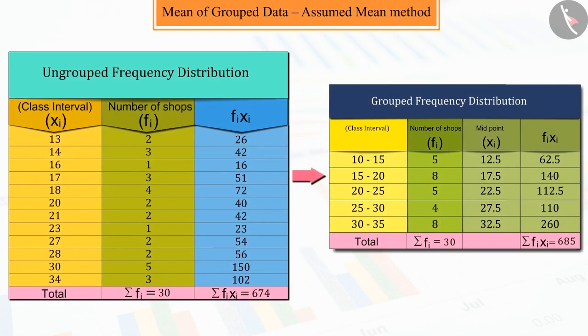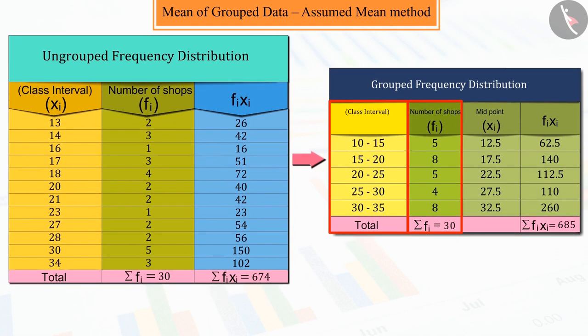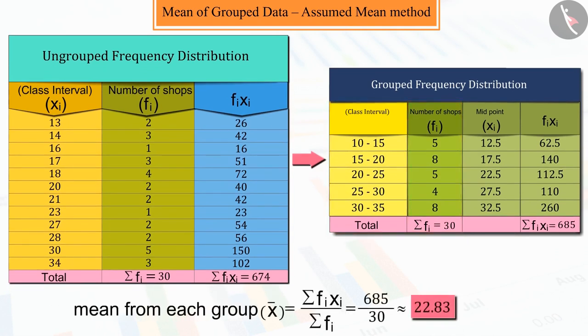We know that due to vast data, we classify the ungrouped data into grouped data and by constructing the class size, find the mean by direct method. But sometimes the value of xi and fi are so large that it becomes difficult to find their product. Also, it takes more time. So can you make the process of finding the product of fi xi even simpler?